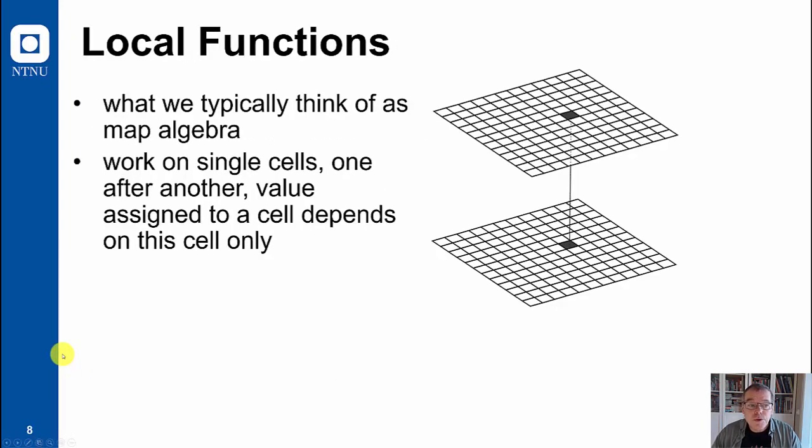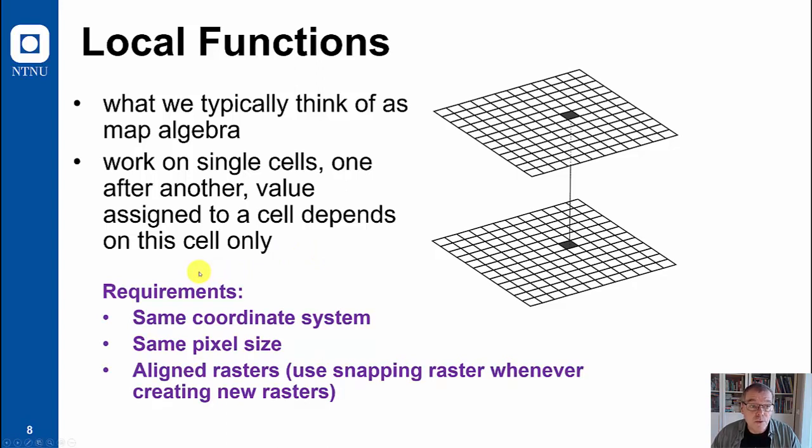Local function is typically what we think of as map algebra, and this works on single cells where one cell at a time is processed. The assigned new value depends on this cell position only. There are some requirements: you should have the same coordinate system, same pixel size, and having rasters aligned is always a good idea. I recommend using the snapping raster in the environment settings whenever you create new rasters.